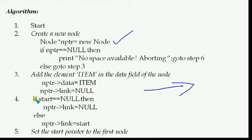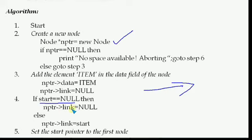Now from step 4, we check if this is the first node. We know it's the first node if start equals null — meaning no node existed before. So if start == null, then nptr->link = null, because this is both the first and last node.